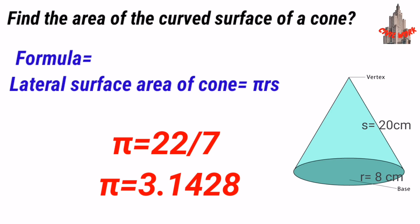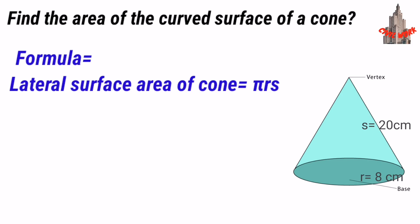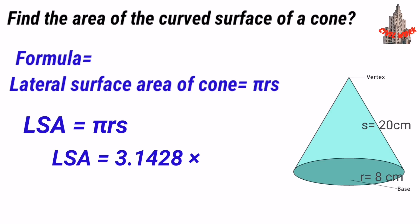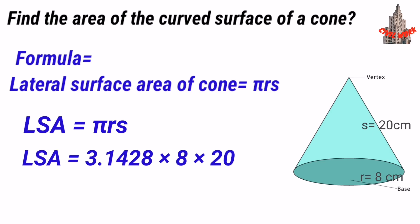Now we calculate the value of π: 22 divided by 7 gives us 3.1428. Next, we calculate the lateral surface area of the cone using the formula π × r × s. The value of π is 3.1428, multiplied by radius 8 cm, and slant height 20 cm.